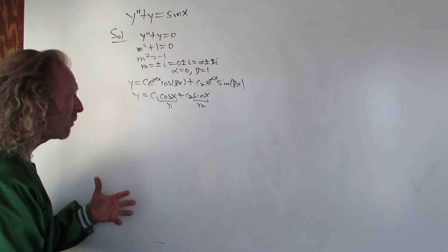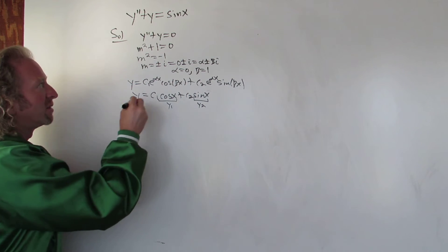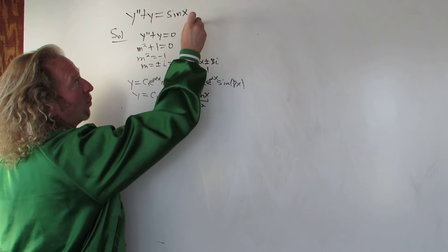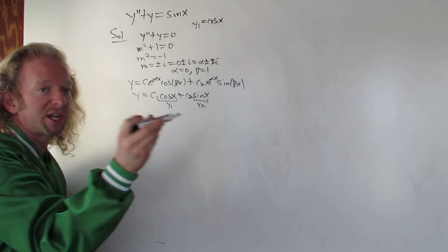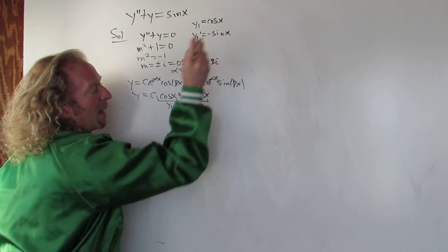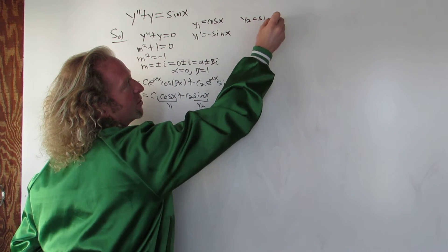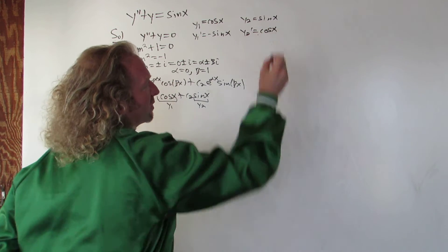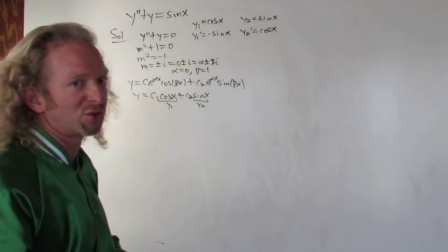That would be the solution to this homogeneous differential equation. This is your y1 and this is your y2 for the variation of parameters technique. Step 1, you solve the homogeneous equation, you find your y1 and you find your y2. Now that we have that, we have to compute the w's. Let me write down the y1 again. y1 is equal to cosine x and the derivative of y1 is negative sine x. y2 is sine x and the derivative of y2, that's cosine x.